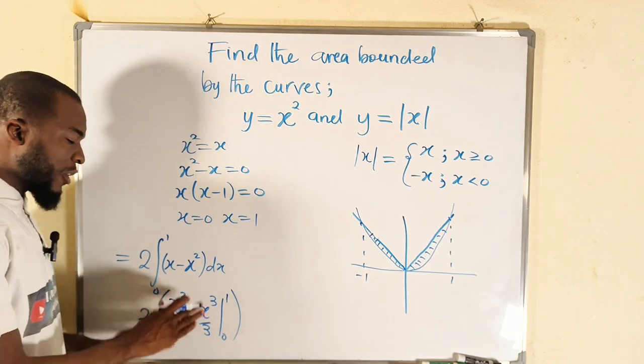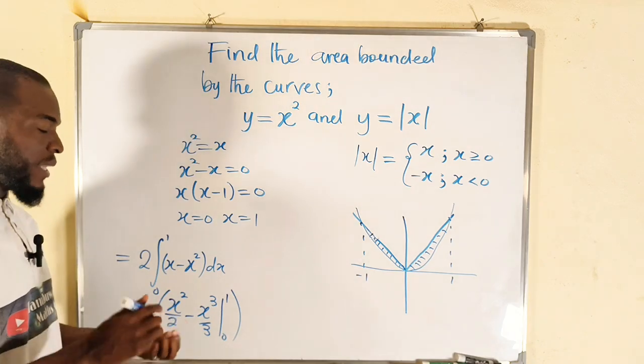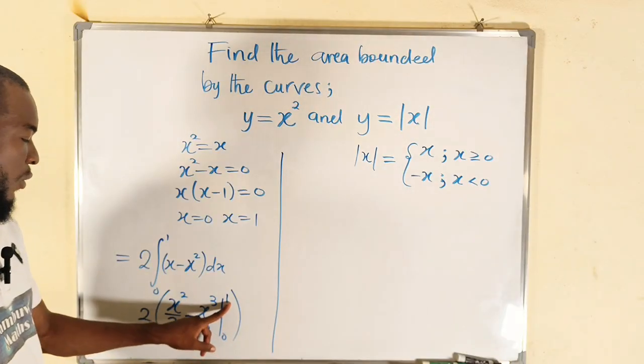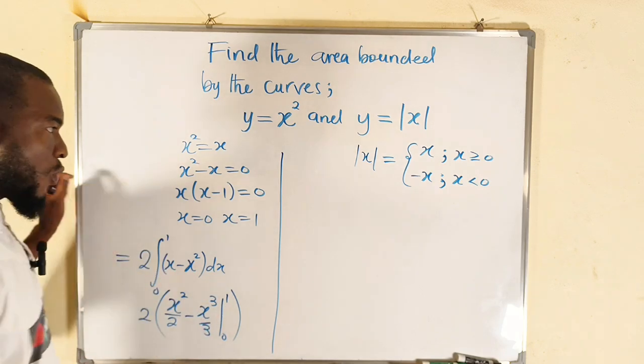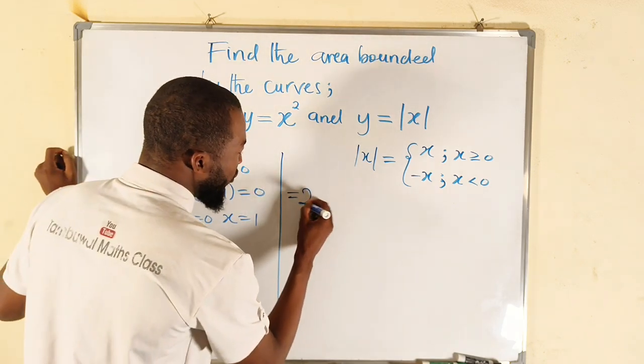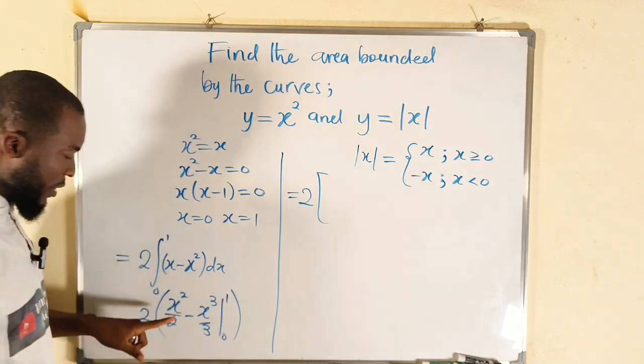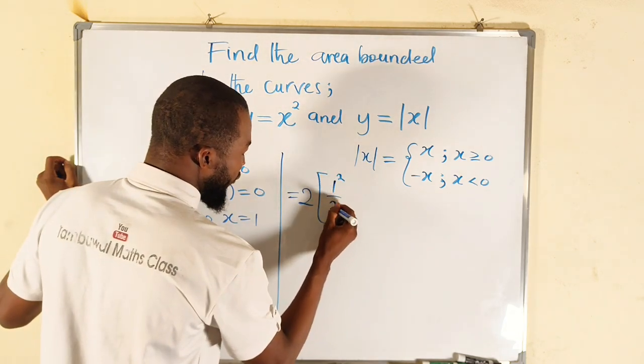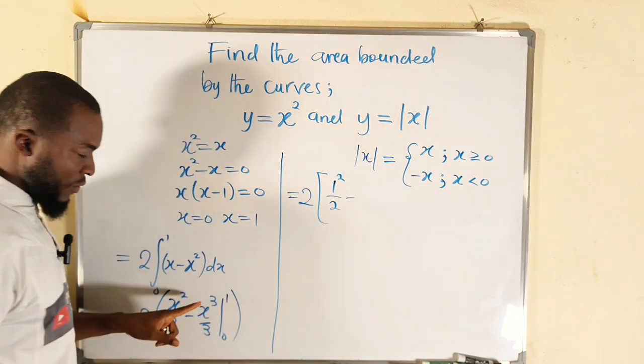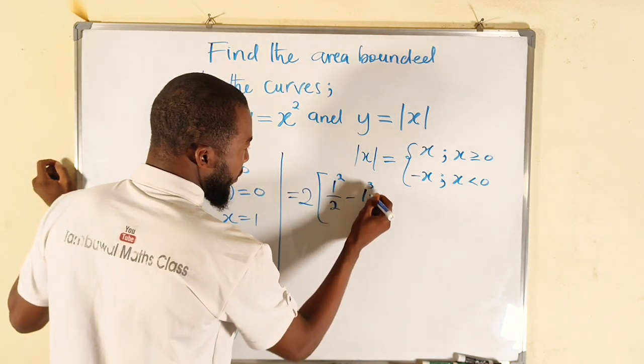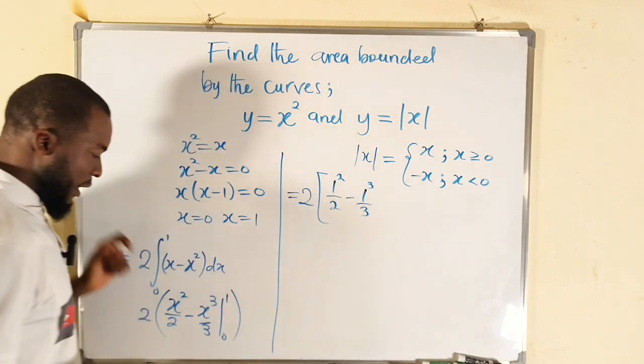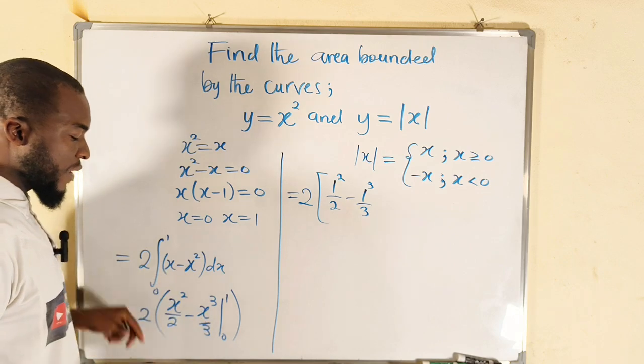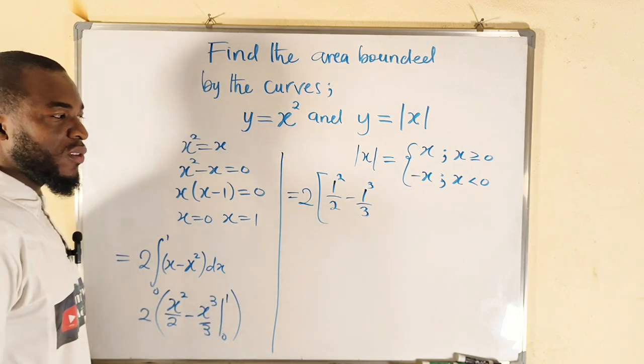So now let us simplify and obtain our total area. Substitute the upper boundary—wherever we have x, we replace it with one. So this is equal to two multiply by the whole of 1² ÷ 2 minus 1³ ÷ 3, then minus the lower boundary, meaning we should replace x's with zero. And everything will be zero, hence we don't have to do that.